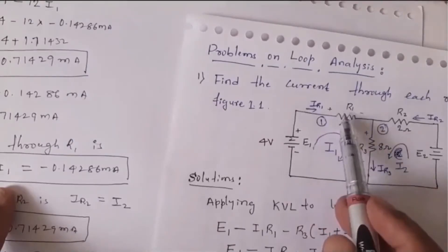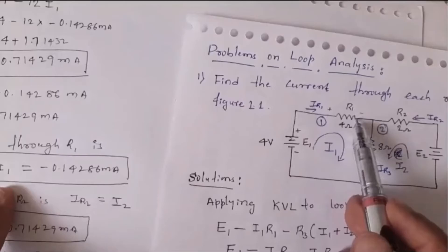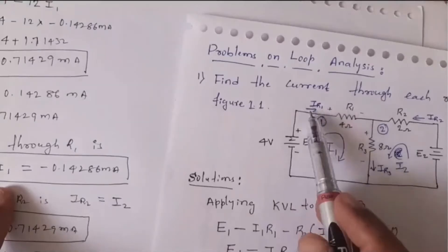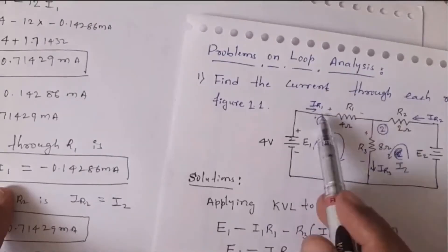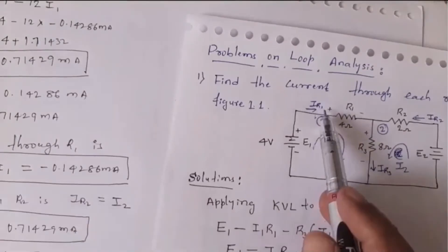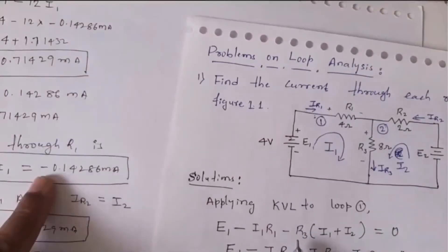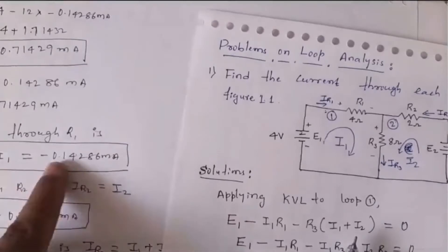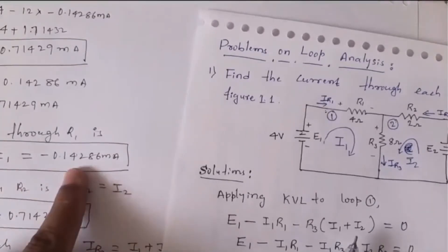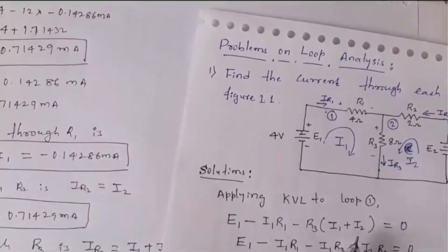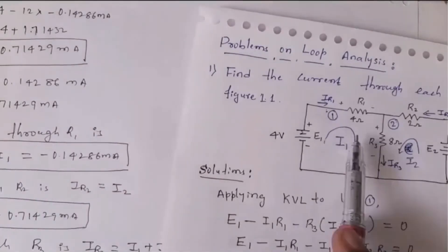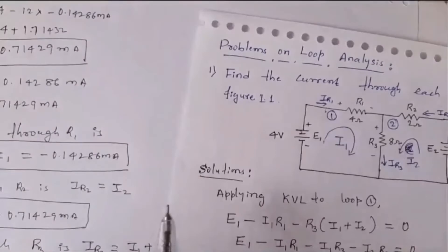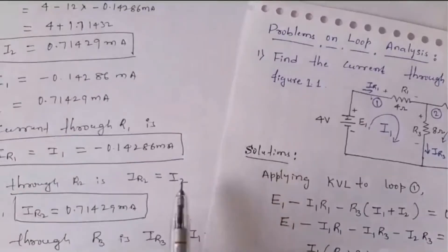ir1 is negative, meaning the actual current through r1 flows right to left — opposite to the assumed direction. This is what the negative sign indicates: the current is in the opposite direction of the assumed current direction. If you assume currents in different directions, the magnitude will be the same but the sign will differ accordingly.